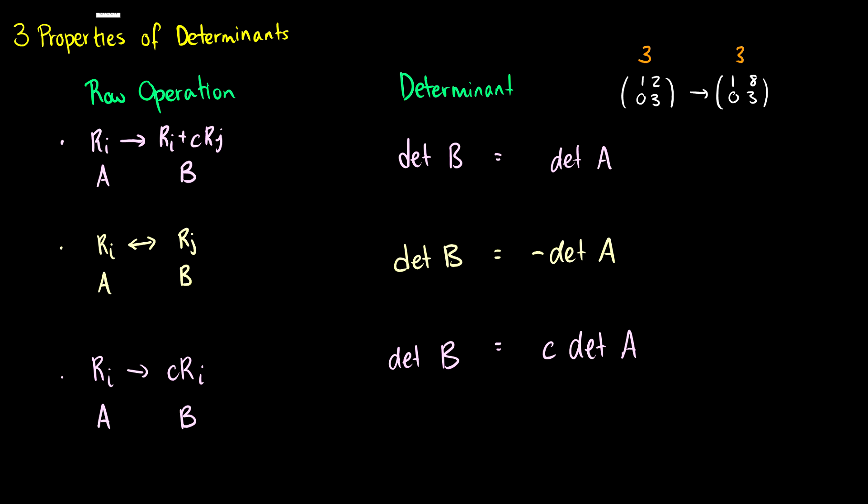What if we switch rows? If we swap two rows, the determinant of the new matrix B is equal to the negative of the determinant of the original matrix A.